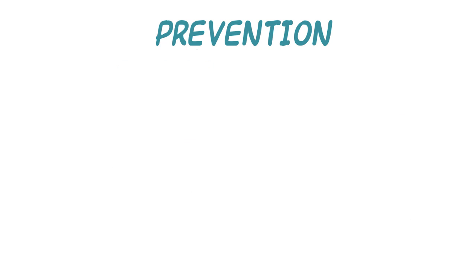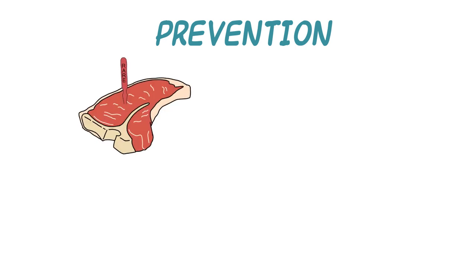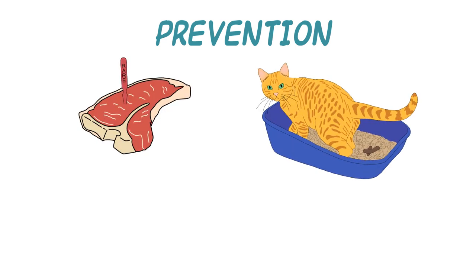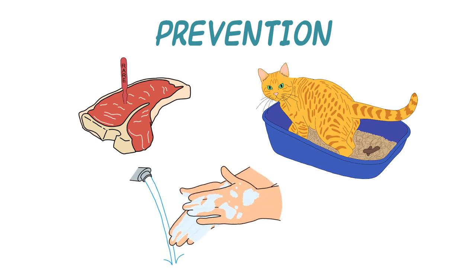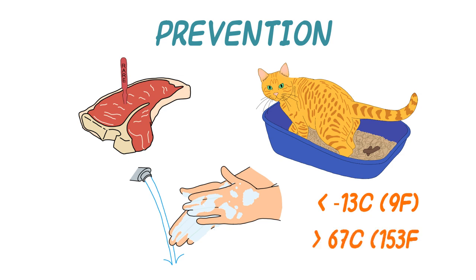To an uninfected individual, exposure to toxo may occur through eating undercooked meat or anything containing oocysts from cat feces. Prevention of infection is best addressed by washing hands and all utensils with soap and water after handling meat. Toxo is killed by soap and water, extreme cold (lower than -13°C or 9°F), or heat (higher than 67°C / 153°F).